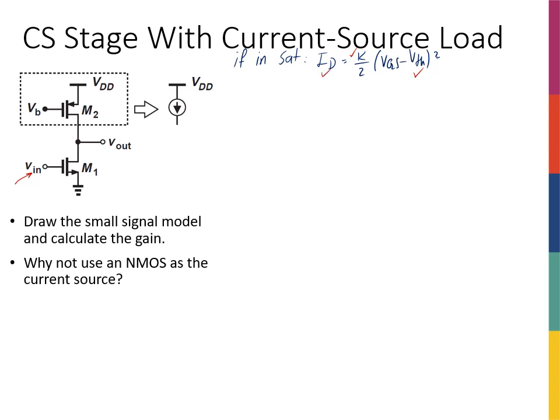So I'm going to use a PMOS transistor to do that. Instead of this ID current source, I'm going to replace it with a PMOS transistor shown inside this box. So what's special about this PMOS transistor? I have gate here, source here, and drain here for PMOS.